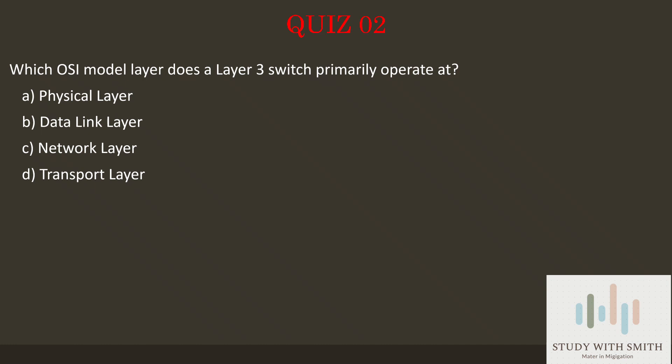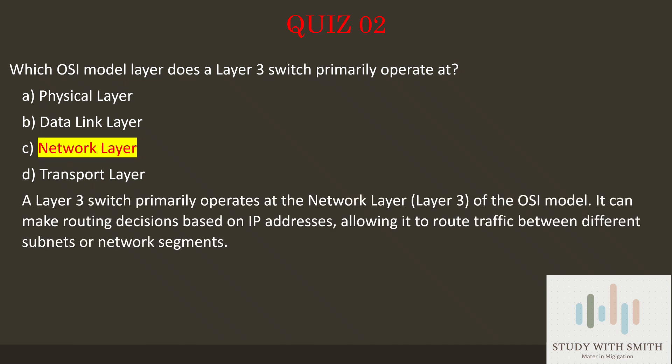The answer is C — Network Layer. A Layer 3 switch primarily operates at the network layer, Layer 3, of the OSI model. It can make routing decisions based on IP addresses, allowing it to route traffic between different subnets or network segments.